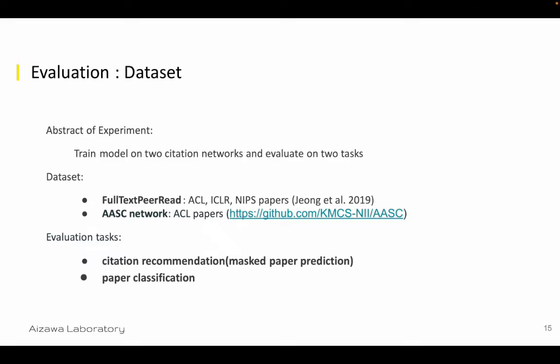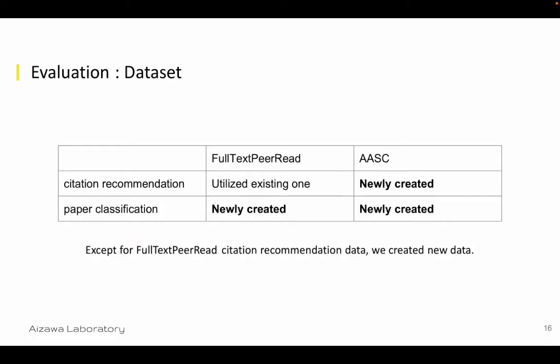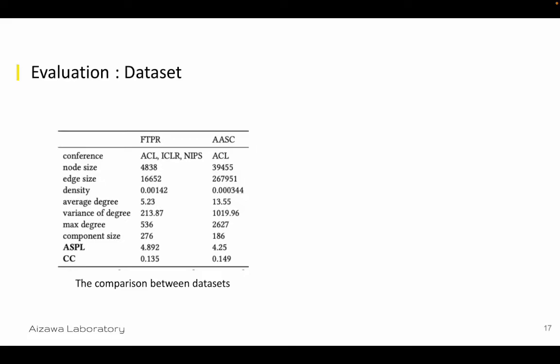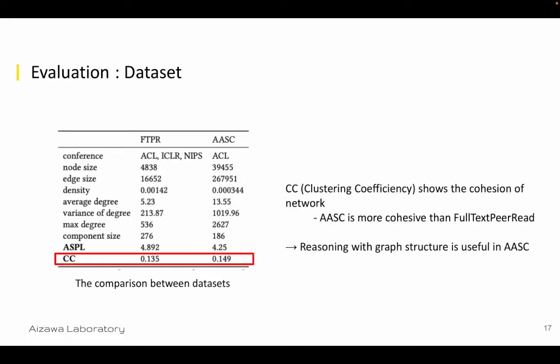We trained models on two citation networks and evaluated on two tasks. The datasets are made from two existing citation networks: FullTextPeer and ACL-ARC datasets. For evaluation tasks, we chose citation recommendation and paper classification. We also analyzed each dataset from network analysis measurements, and found that the ACL-ARC dataset has a higher clustering coefficient than FullTextPeer. Clustering coefficient shows the cohesion of a network, meaning that in ACL-ARC, reasoning with graph structure is more useful than in FullTextPeer.